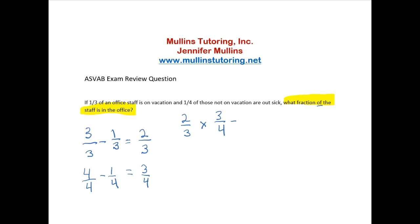So I'm going to multiply two-thirds times three-fourths. When I have the multiplication sign in the middle, I multiply straight across. So I'm going to say two times three equals six, and three times four equals twelve.